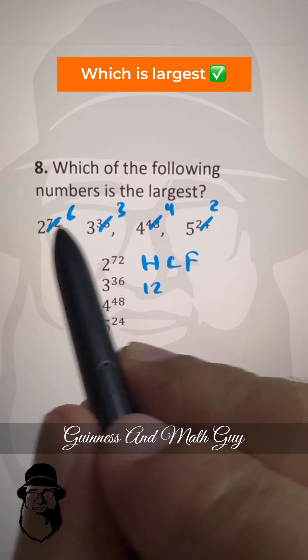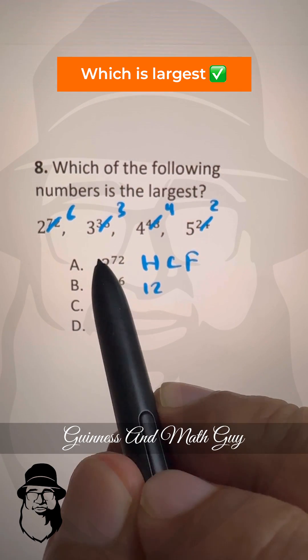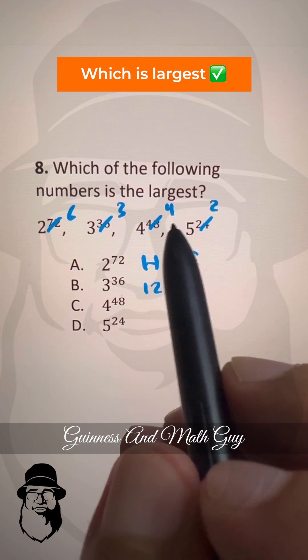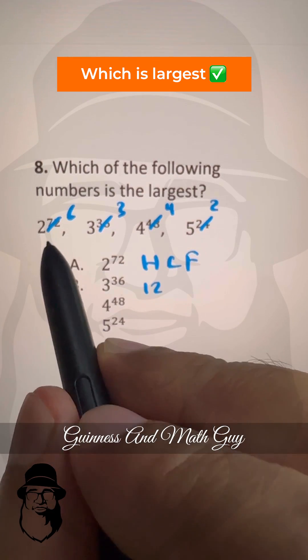Now 2 to the power 6 is 2 times 2 times 2 is 8 and then 2 times 2 times 2 is also 8, 8 times 8 is 64. So this is 64.